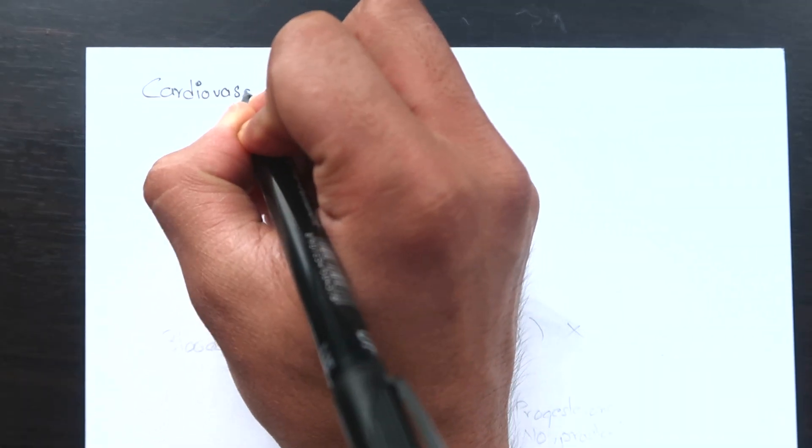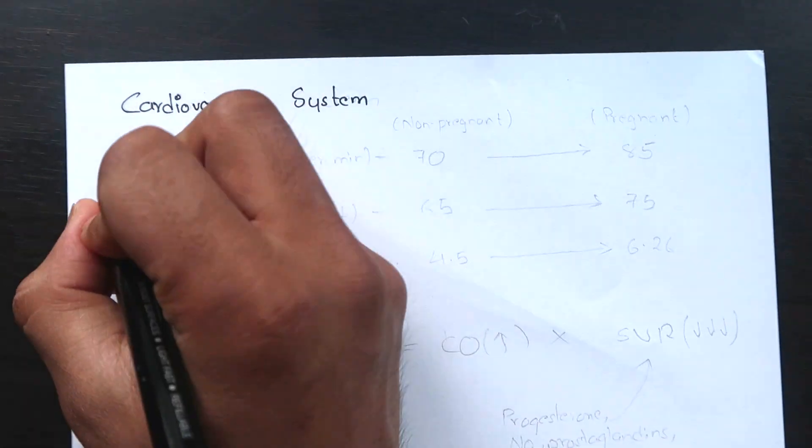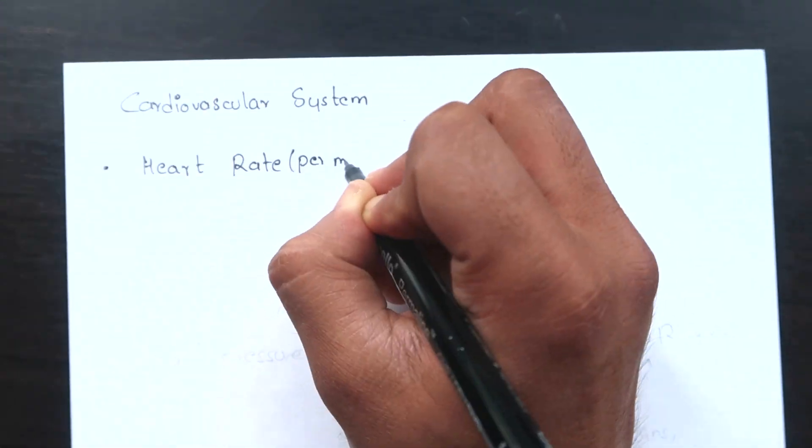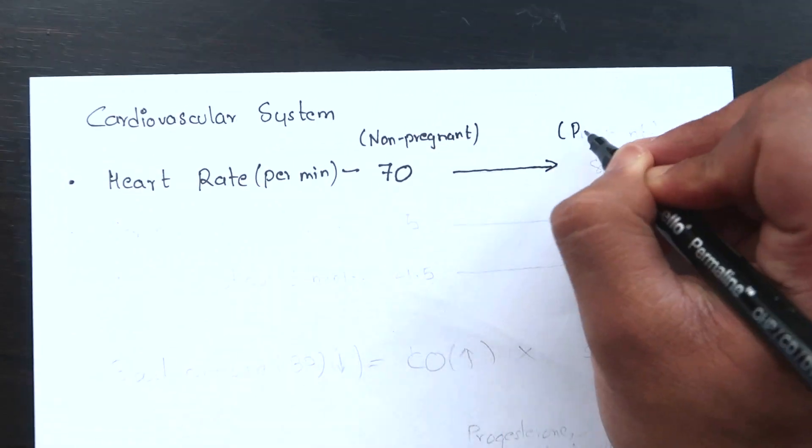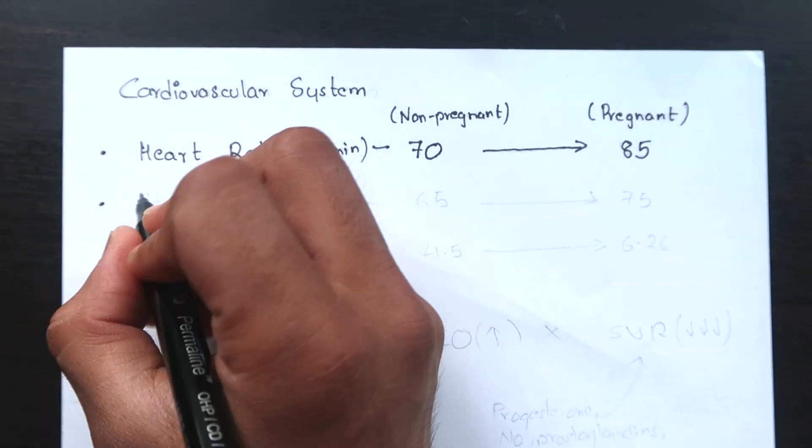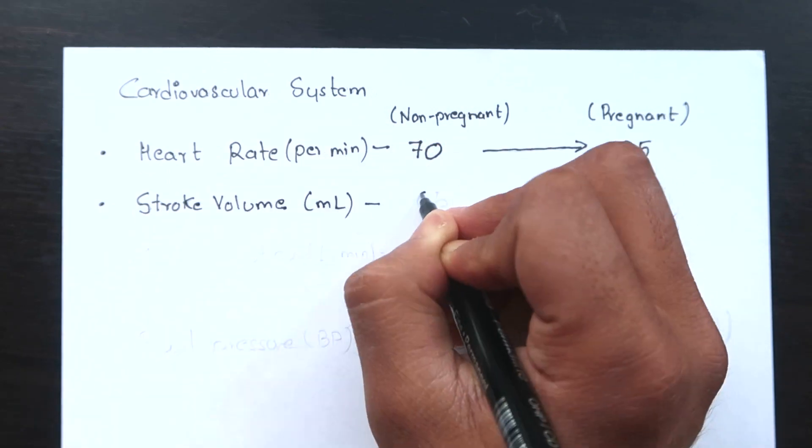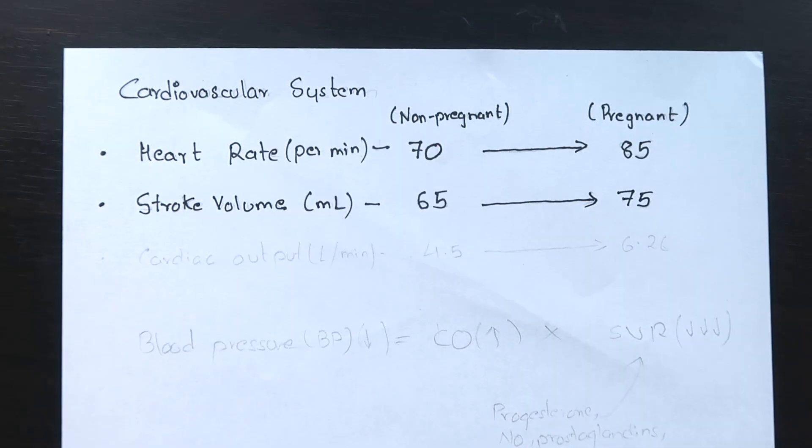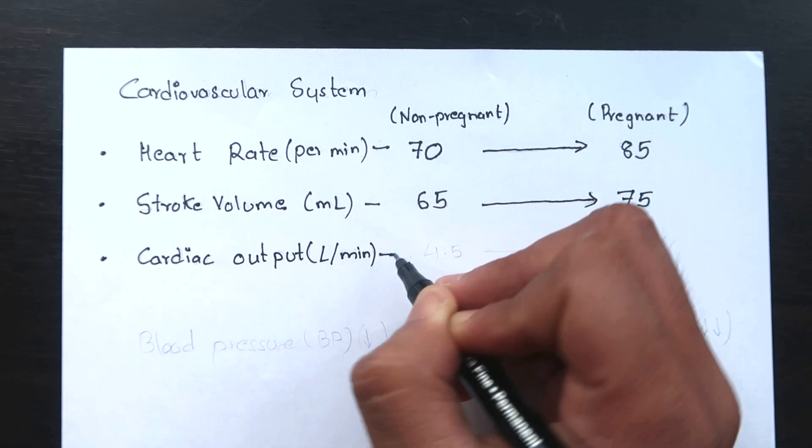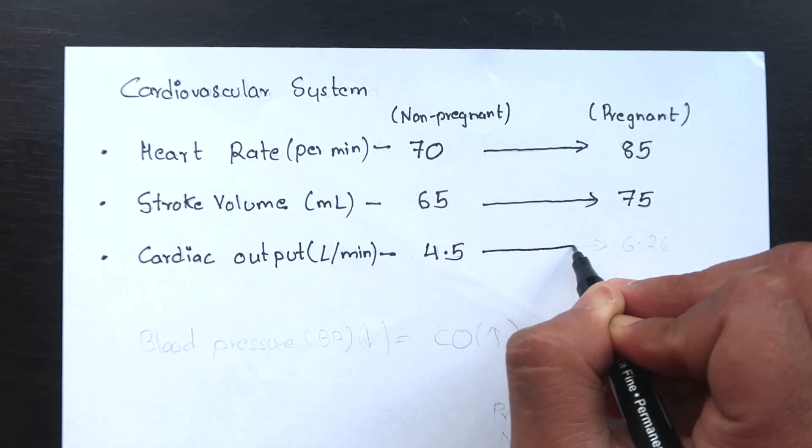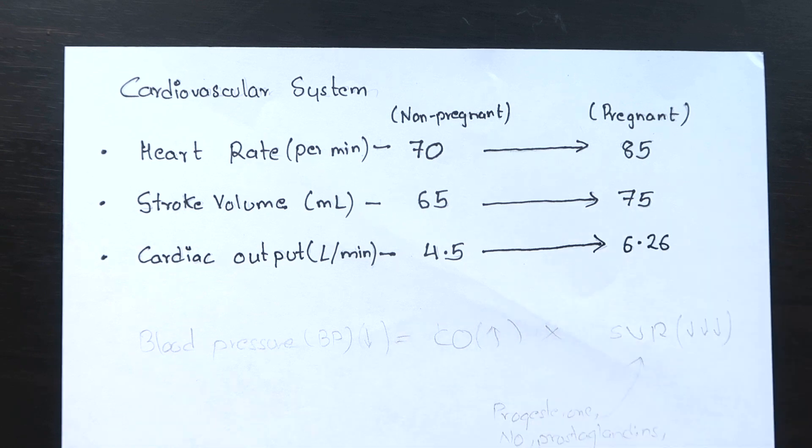Now let's learn about the cardiovascular changes. The heart rate increases from 70 per minute to 85 per minute and the stroke volume increases from 65 to 75 ml. And as the cardiac output is the product of these two it also increases by 40% to reach 6.26 liter per minute.